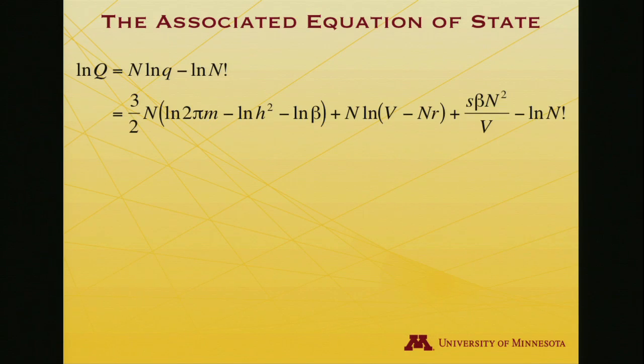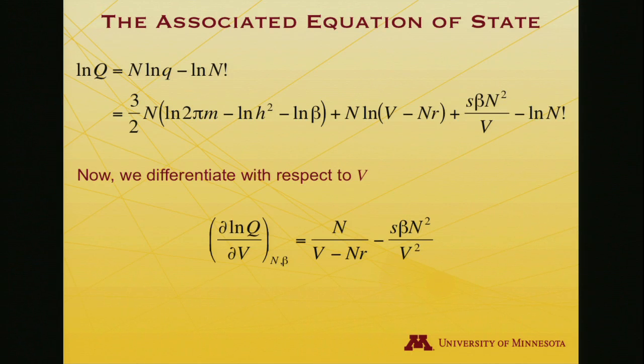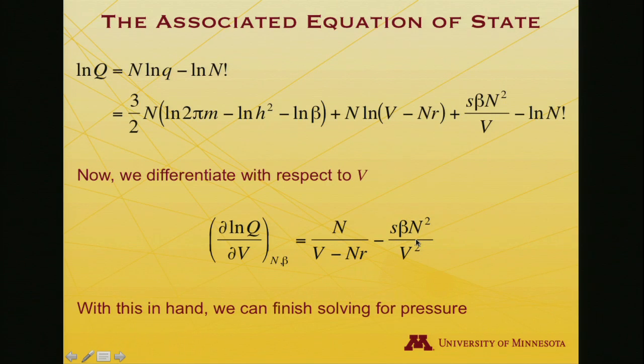We'll put that in the next slide so we can continue to work with it. Now, we need to differentiate this with respect to v. Here's a term that depends on v. It's a logarithm, and so we'll get 1 over the argument. It's multiplied by n, so I get n divided by v minus n times r. Here's another term that depends on v. It goes as v to the minus 1, so when I differentiate, I'll get a term in negative v to the minus 2. And so here it is, the negative sign and 1 over v squared.